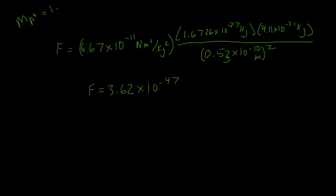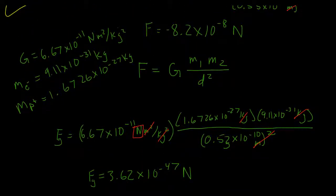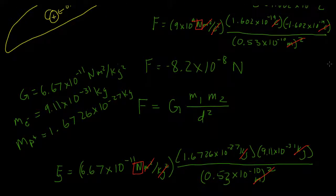Let's look at our units. Meters squared in the numerator cancels meters squared in the denominator. Kilograms times kilograms in the numerator cancels kilograms squared in the denominator. We're left with newtons. So the gravitational force is on the order of 10 to the negative 47th, while the electric force is only on the order of 10 to the negative 8th.